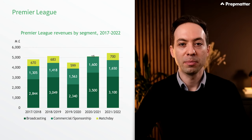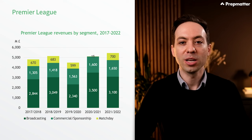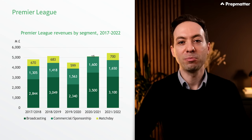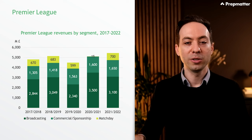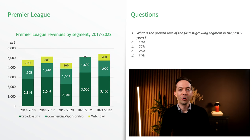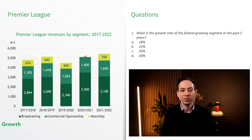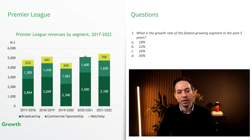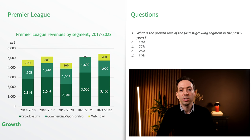We are looking at Premier League revenues by segment between the 17-18 season and 21-22 season. The revenue streams are Broadcasting, Commercial Sponsorship, and Match Day. On the y-axis, figures are provided in million pounds. First question: what is the growth rate of the fastest growing segment in the past five years? For Broadcasting, the revenue was 3.1 billion pounds in 21-22 and 2.844 billion pounds in 17-18, giving a growth rate of 9%. For Commercial Sponsorship, revenue was 1.65 billion in 21-22 and 1.305 billion in 17-18, giving a growth rate of 26%.